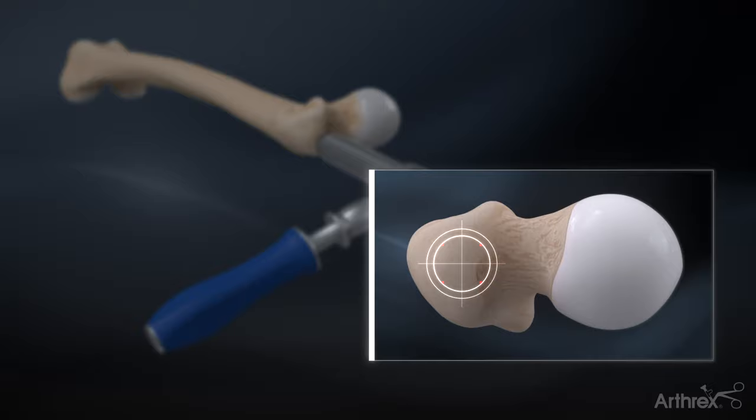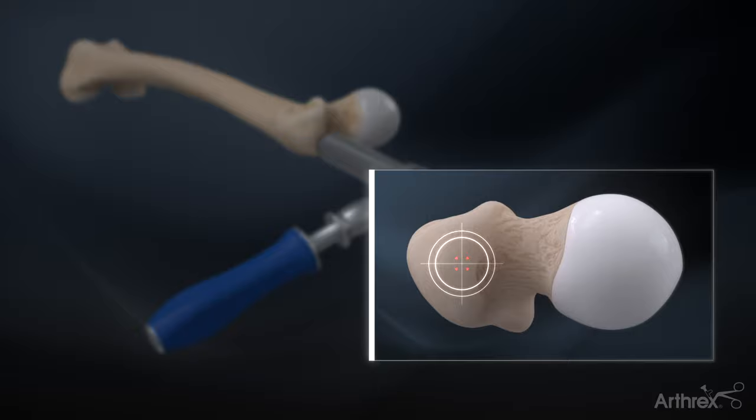Determine the entry point for the nail at the tip of the greater trochanter. This point may vary slightly depending on the patient anatomy and fracture pattern.